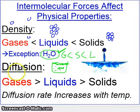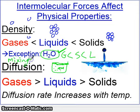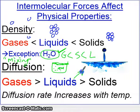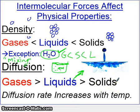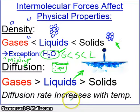Diffusion is the mixing of gases and liquids. Gases mix very quickly because the particles are free to move. Liquids also mix, but not as quickly. For example, a drop of food coloring in water eventually diffuses and mixes completely. Solids have almost no diffusion because solid particles cannot move — they're stationary. Diffusion also increases with temperature: the hotter the temperature, the faster the diffusion, because particles move faster.